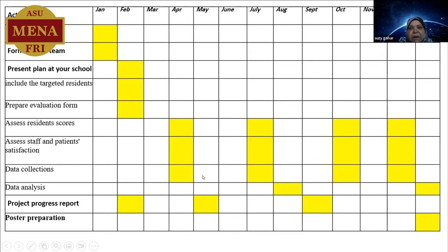Data collection was scheduled for April 1, July 1, and October 1. The data analysis was scheduled for August, and the final data analysis was scheduled for January. We need to present progress reports in February, May, and September. The last milestone was the poster presentation, which will remain in January.